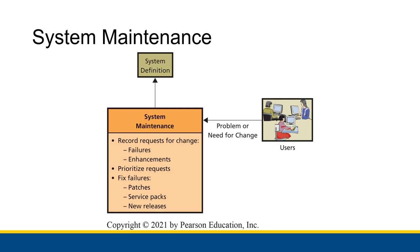These requests could come from the users, but there's also a possibility they could come from managers trying to work with the competitive strategy and bring things in a new direction with regards to that system. All of these requests are going to get recorded and prioritized. The information system personnel are going to figure out what the high-priority issues are and what the low-priority ones are.